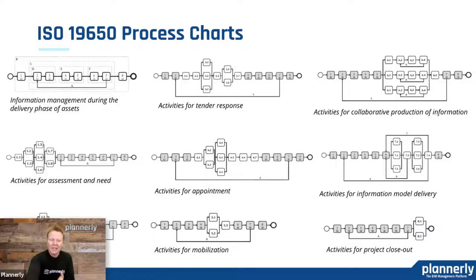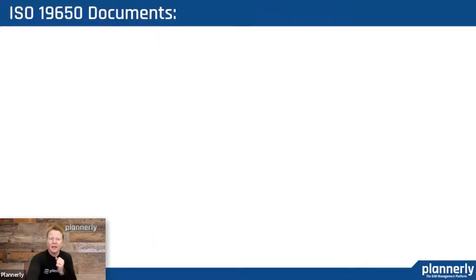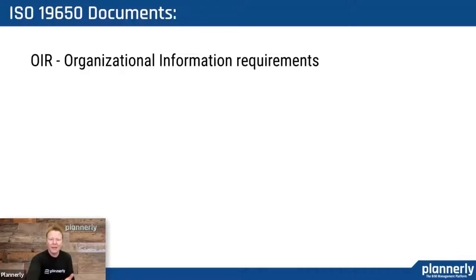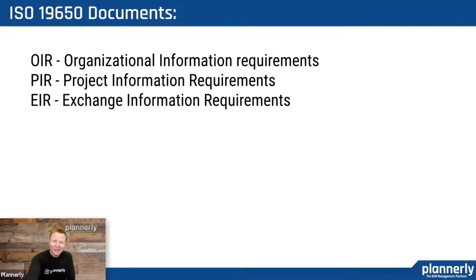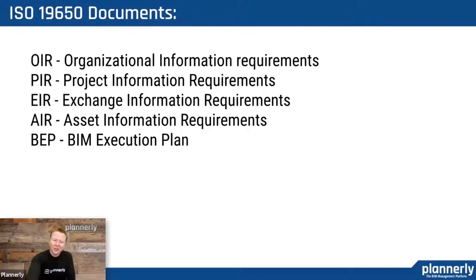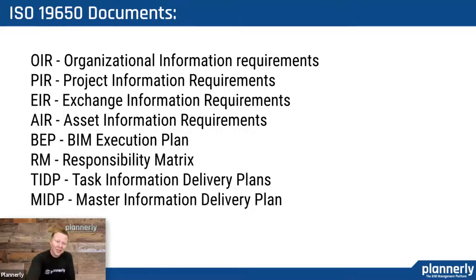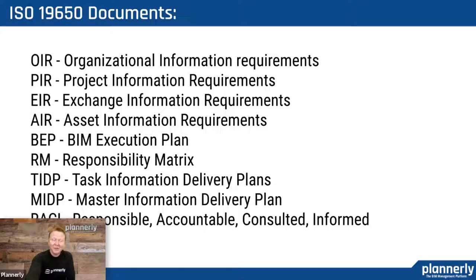There are fantastic explanations about the process steps and the different things that need to occur at different stages throughout the project. There are these eight steps that are unpacked in diagrams with lots of detailed requirements. And as a result, there are a lot of documents that might need to be created by different teams at different stages throughout the project. They range from the organizational, the project, the exchange, the asset, execution planning, responsibility matrix, and task and master information delivery plans, RACI charts, and many others.